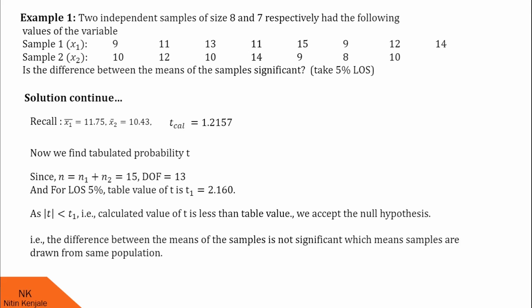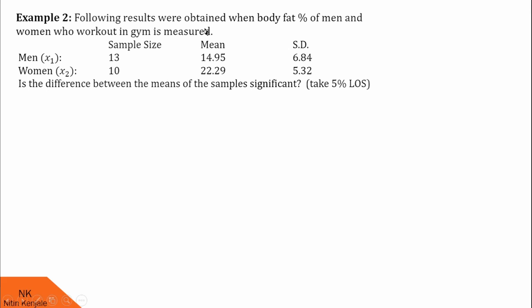I hope you understood this example. Now let us proceed for the next one. The following are the results obtained when body fat in percentage of men and women who work out in the gym is measured. This is the data of men's and this is the data of women's. The sample size is 13 for men and 10 for women. For men the mean is 14.95 and for women the mean is 22.29. For men the standard deviation is 6.84 and for women the standard deviation is 5.32. The question is: is the difference between the means of samples significant?